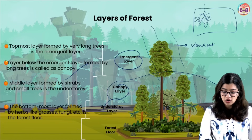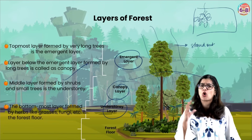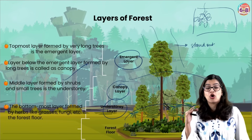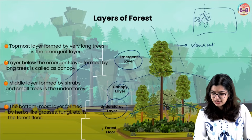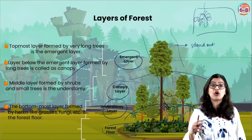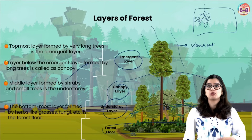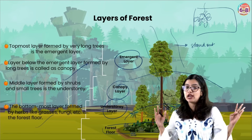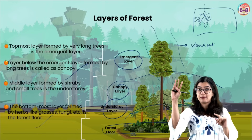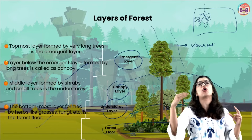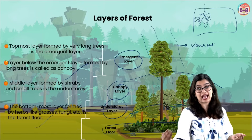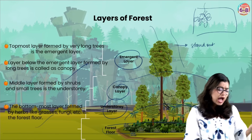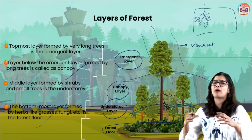Next we have the middle layer, called the understory, which is mainly made up of shorter trees. And finally we have the forest floor. On the floor of the forest we find bushes, smaller trees, and various dried leaves. To summarize the four layers: the emergent layer includes a few extremely tall trees that stand out; the canopy layer contains the majority of tall trees; then the understory layer; ending with the forest floor.